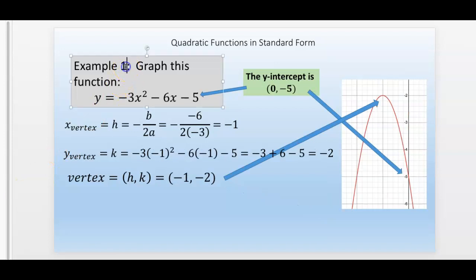This is example number two. The y-intercept is easy to find, negative five. I just come down to negative five and mark it.